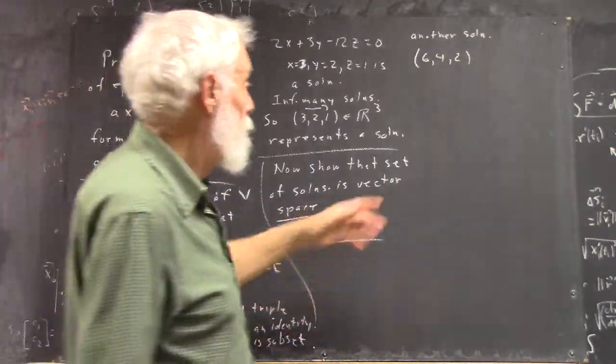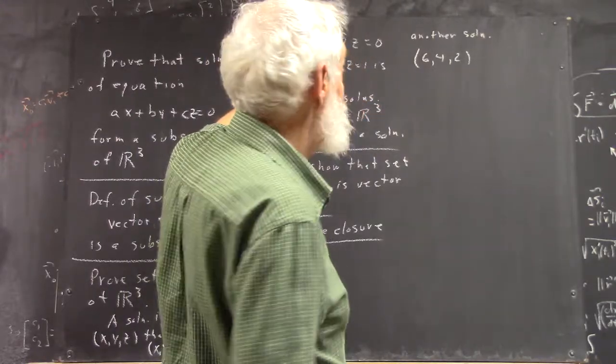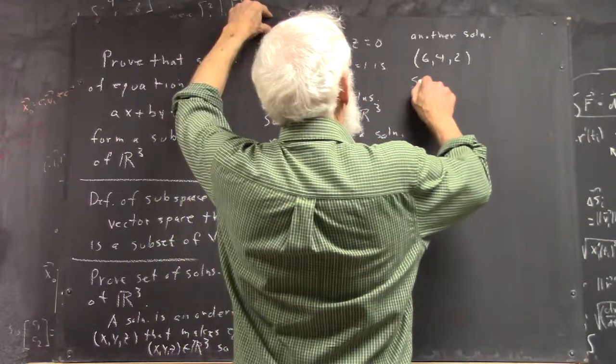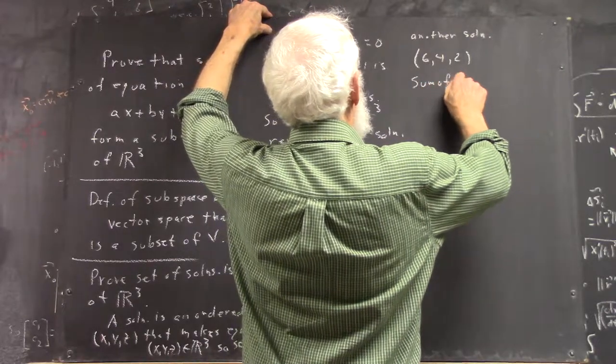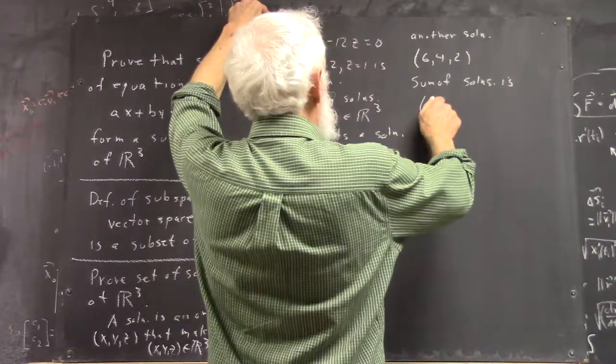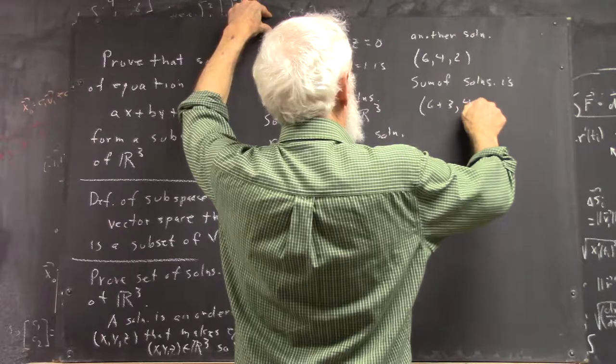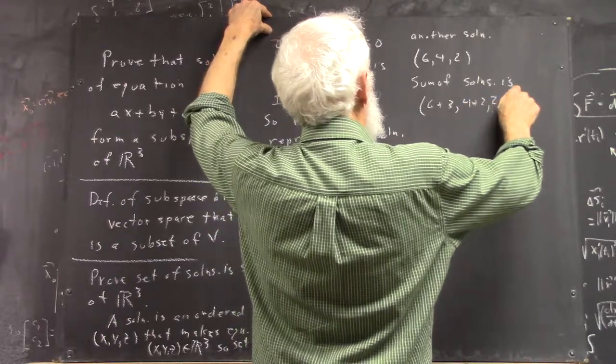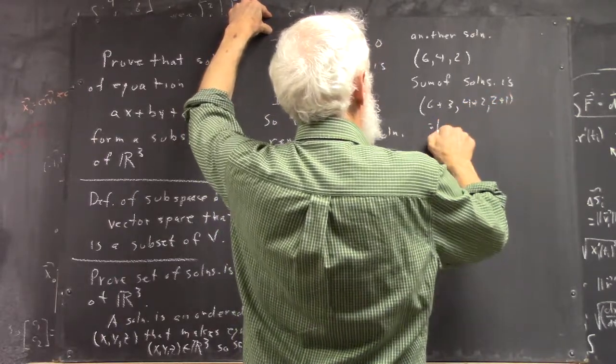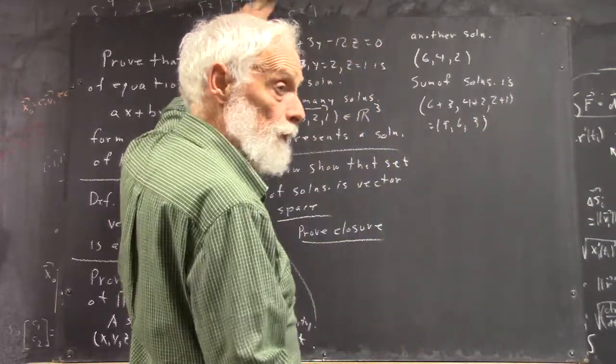Well, let's check it out. If I add this solution to this solution, is it still a solution? Well, we're going to get six plus three. We add this to this, right? Four plus two, two plus one, equals nine, six, three.